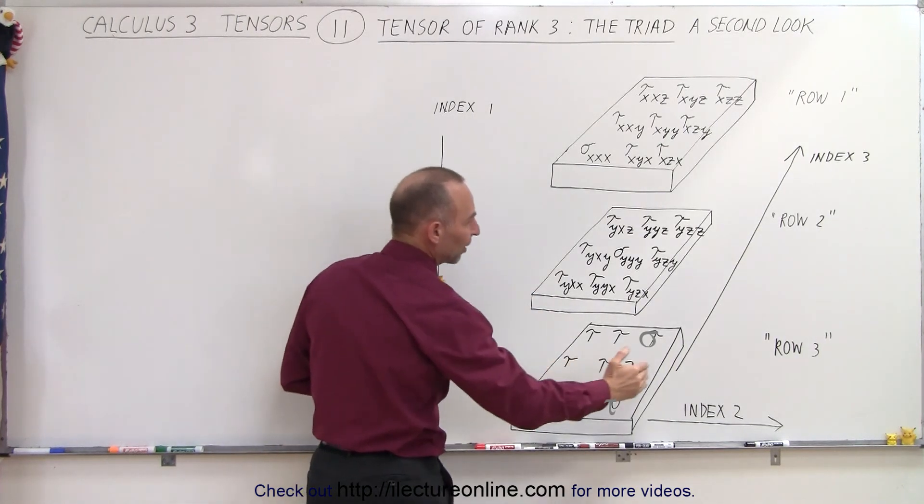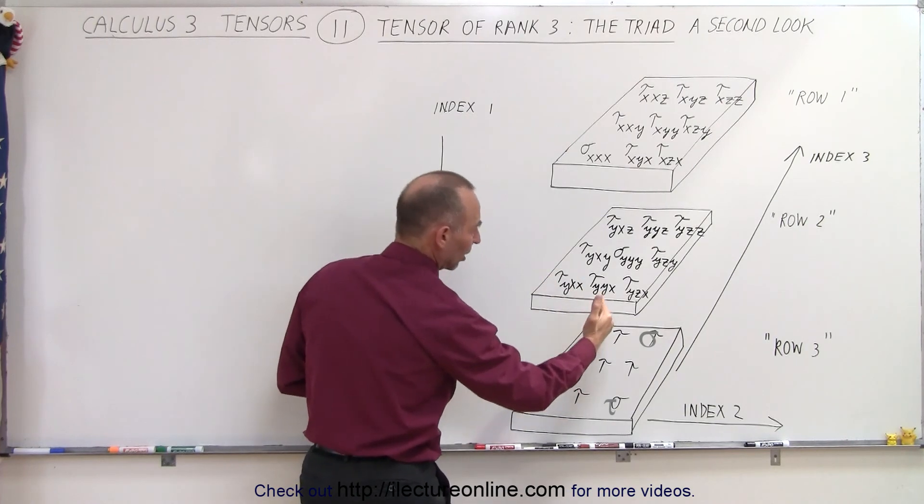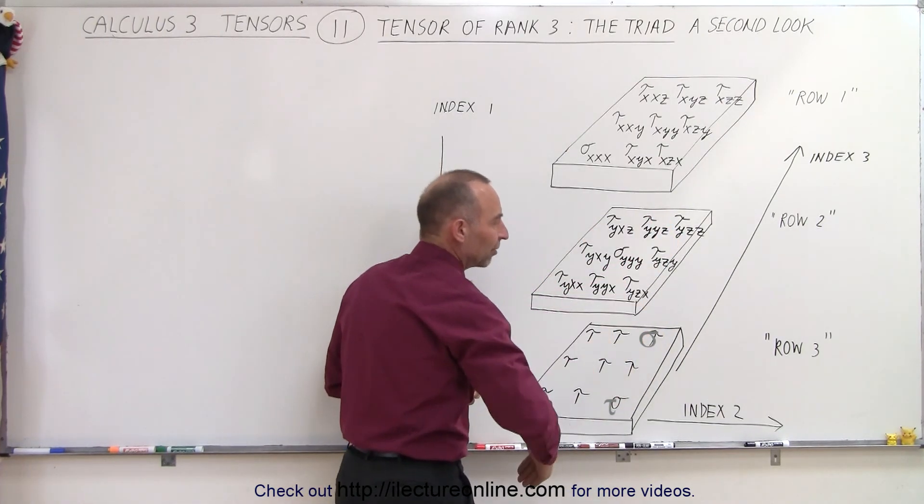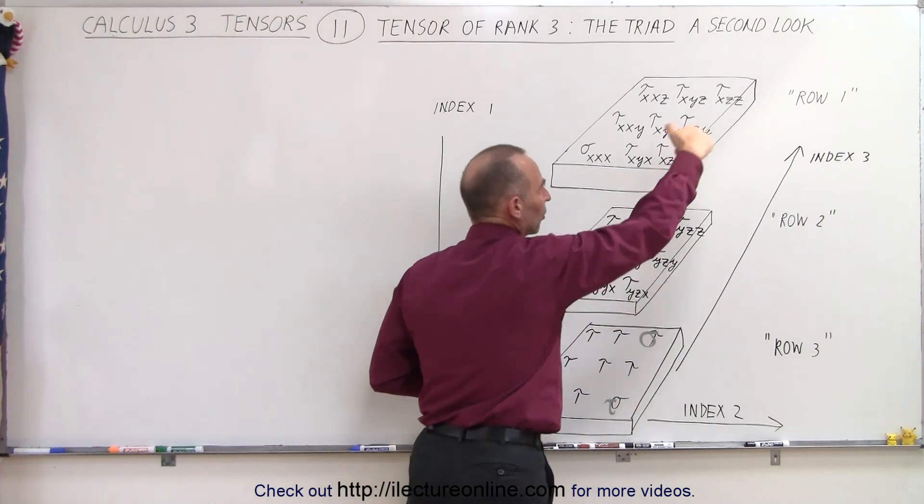Then the second index represents the column from left to right, so we have the first column, the second column, the third column, and then the third index represents the page, which is the first page, the second page, and the third page.